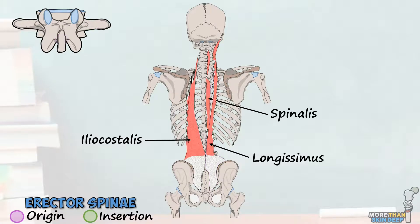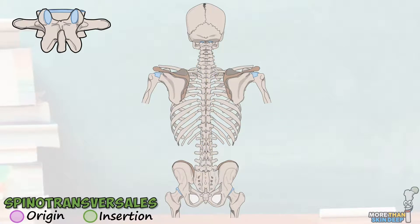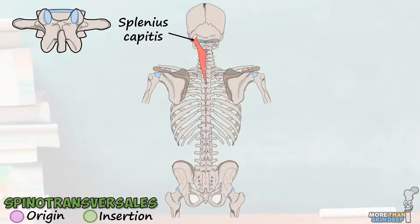The last two major deep muscles of the back are both located in the posterolateral neck and are known together as the spinotransversales. The first of these is the splenius capitis muscle. This originates from the nuchal ligament and the spinous processes of C7 to T3, and inserts into the mastoid processes of the temporal bone, as well as the lateral part of the superior nuchal line of the occipital bone. Splenius capitis acts solely to extend and rotate the head. Then there's the very similar splenius cervicis, which originates from the spinous processes of T3 to T6 and inserts into the transverse processes of C1 to C3. Its function is similarly to extend and rotate the neck.